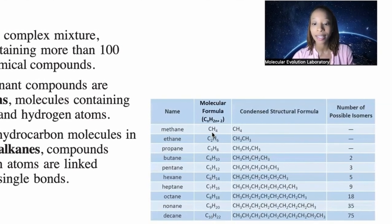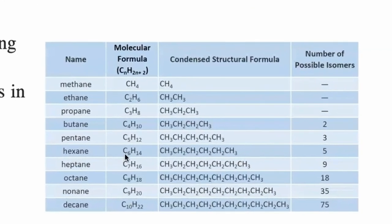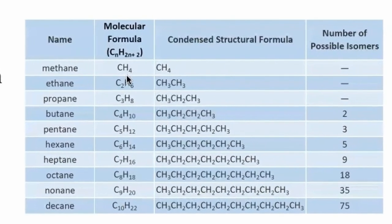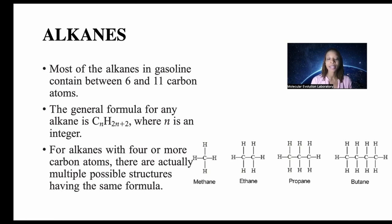As you go up the alkane series, the carbon atoms increase by a factor of one for each step, and the hydrogen atoms increase by a factor of two. So methane has 4H, ethane 6H, propane 8H, butane 10H, pentane 12H, hexane 14H, and so on. Most alkanes in gasoline contain six to eleven carbon atoms. The general formula for an alkane is CₙH₂ₙ₊₂, where n is an integer.